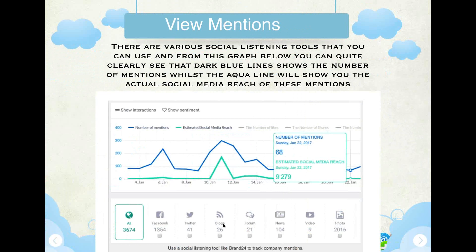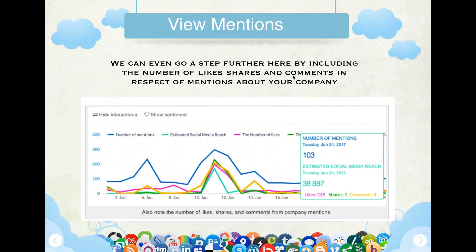At the bottom you can also see your amount of tweets, Facebook, blogs, forums, and news — all to do with your brand. We can even go a step further by including the number of likes, shares, and comments in respect to mentions about your company. For example, there were 249 likes, one share, four comments, with an estimated social reach of 38,887.